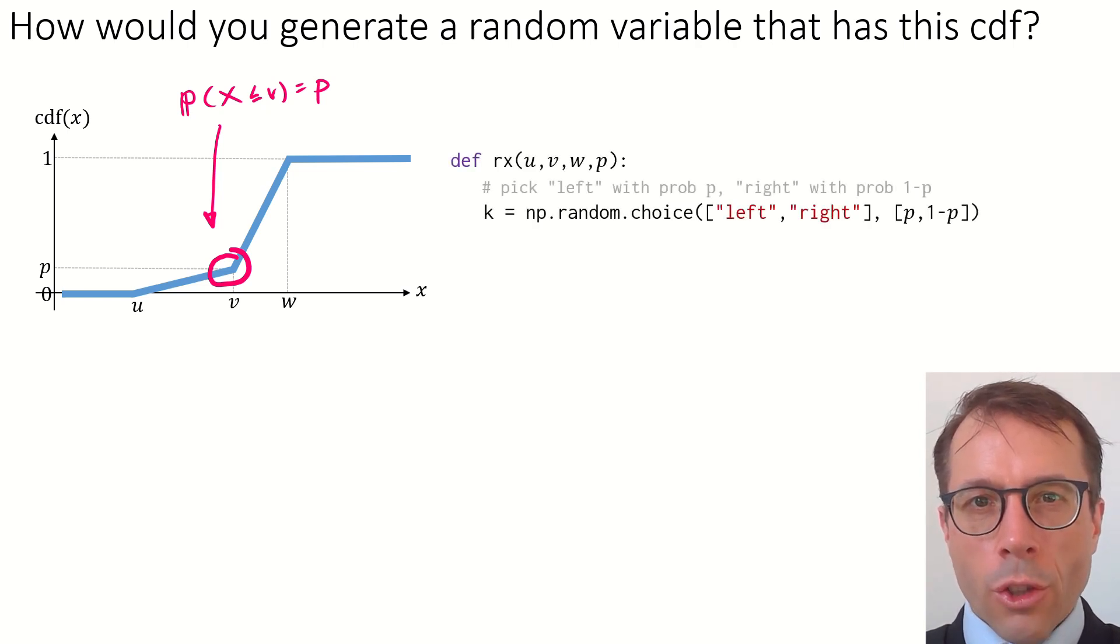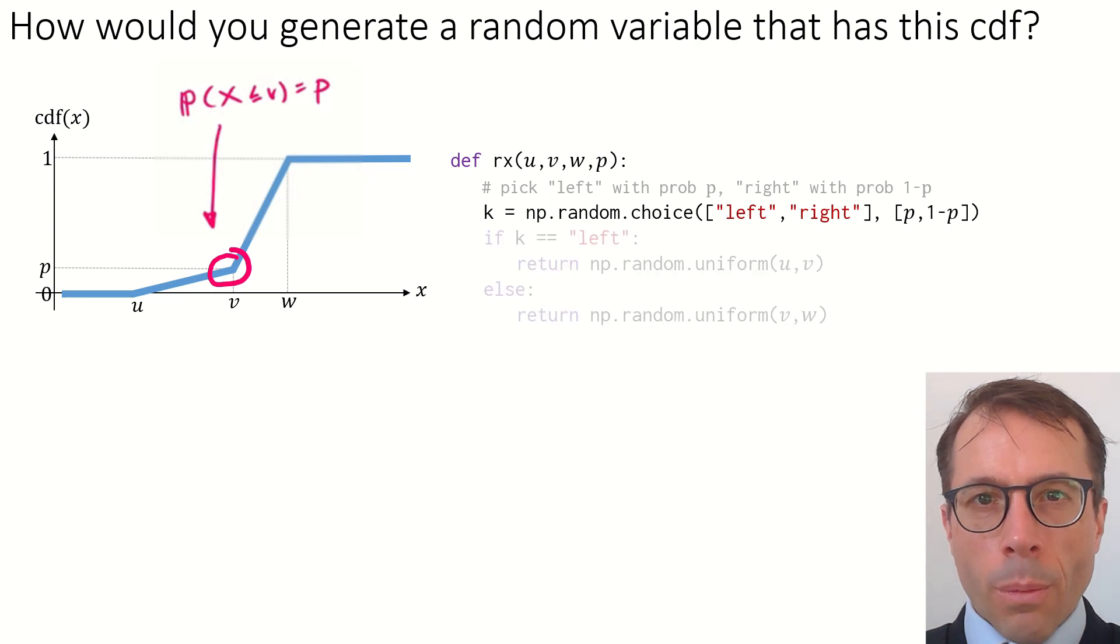So, the first thing I'm going to do is make a choice. Either generate something to the left of v with probability p, or generate something to the right of v with probability 1 minus p. If I've decided to generate something on the left, then all values between u and v are equally likely because the CDF has constant slope. So, I'll simply generate a uniform random variable. Likewise, if I've decided to generate something on the right, I'll generate a different uniform.